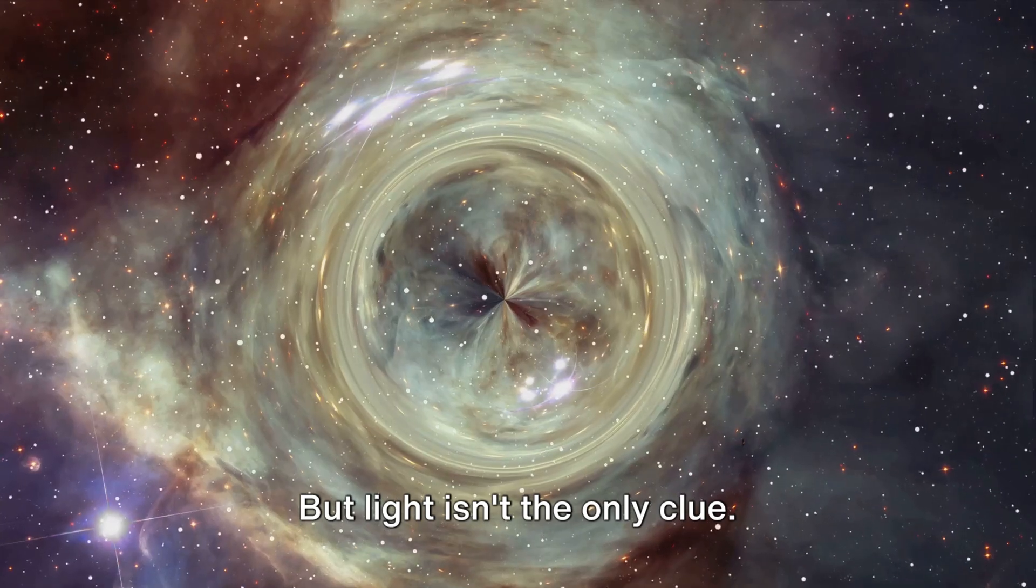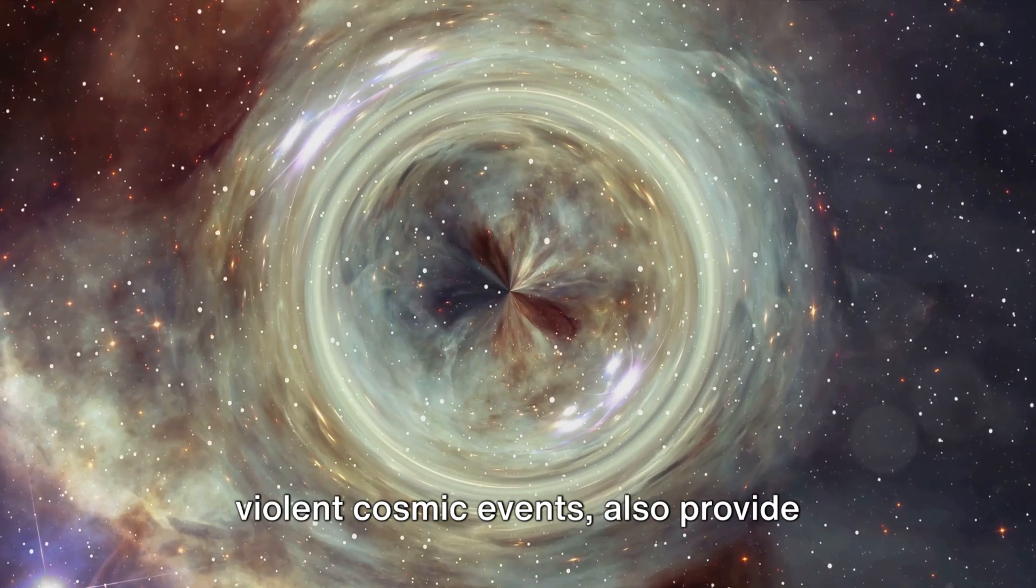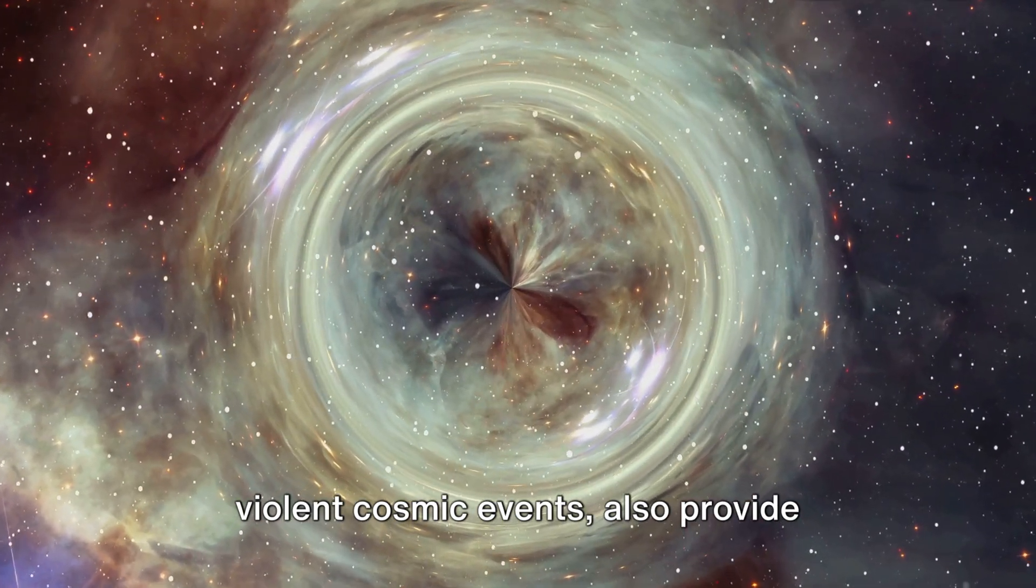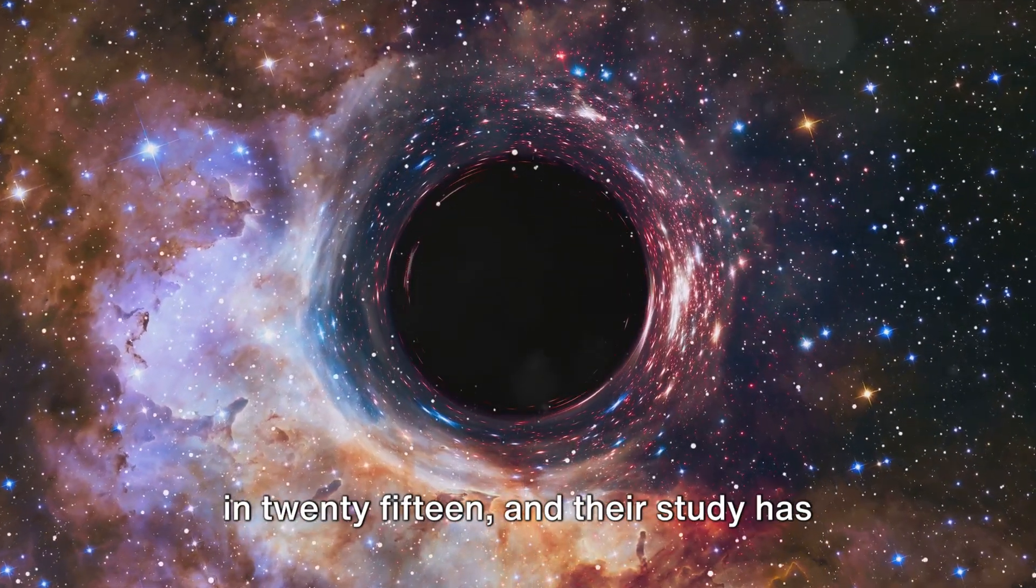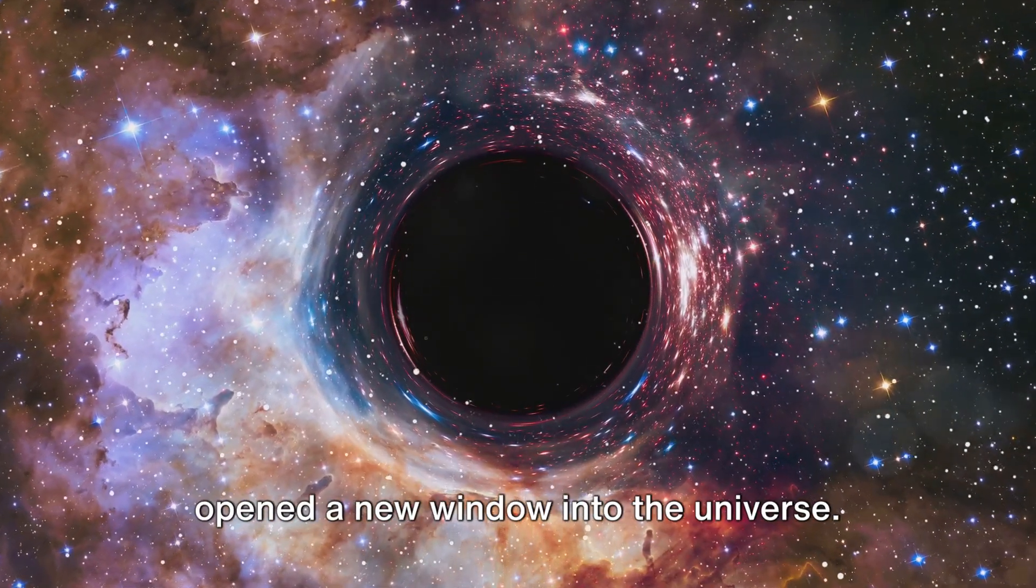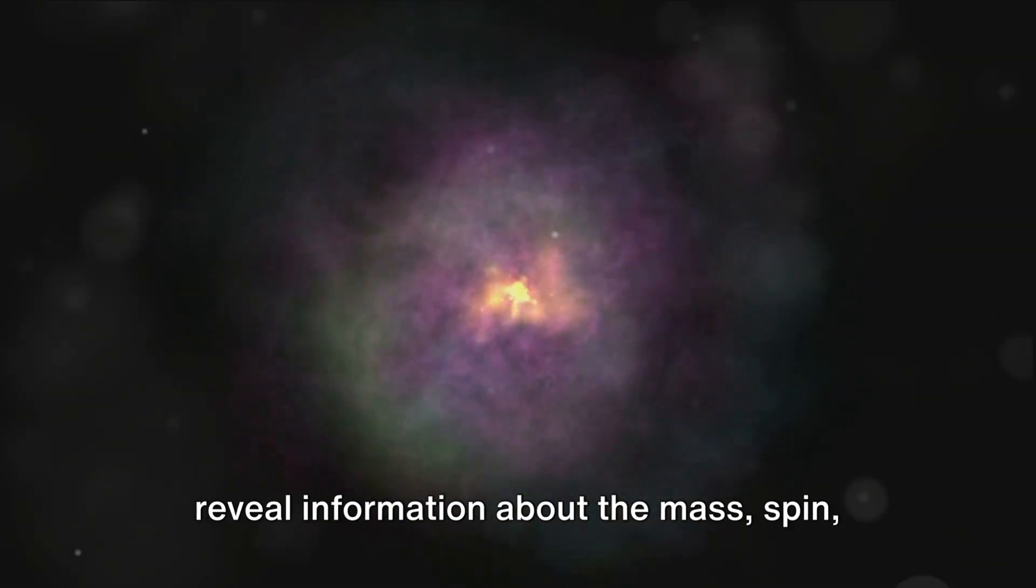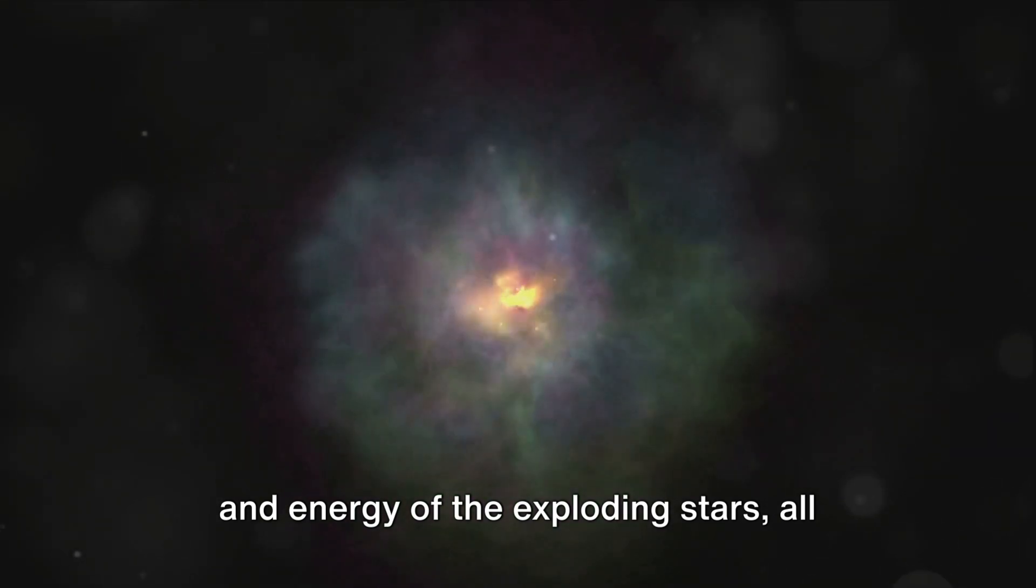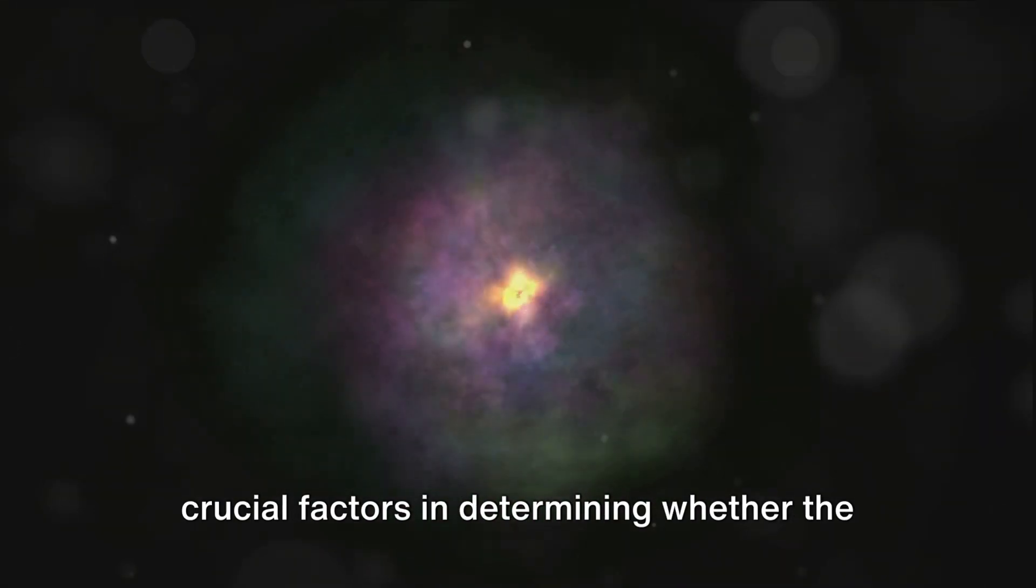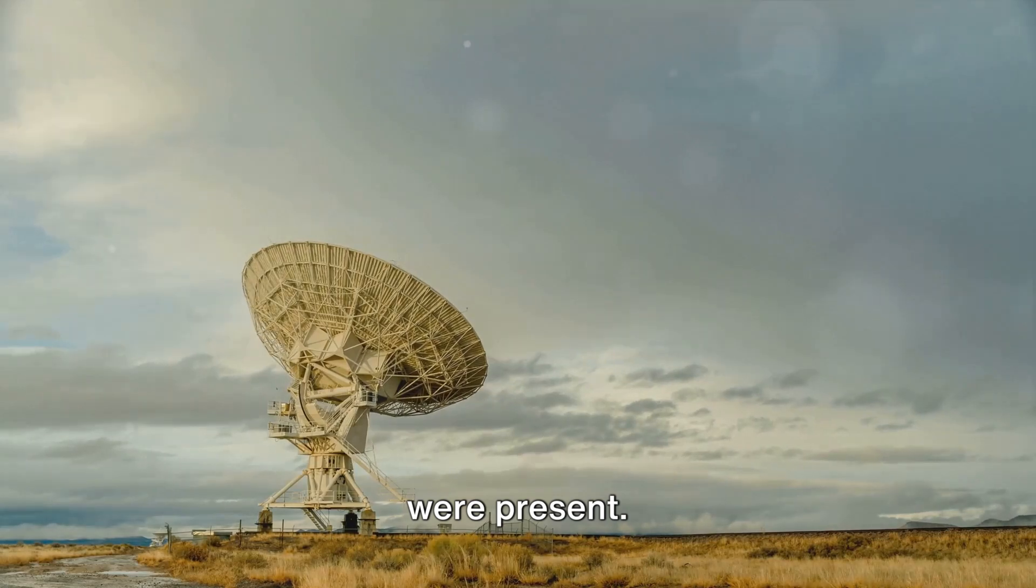But light isn't the only clue. Gravitational waves, ripples in the fabric of space-time caused by the most violent cosmic events, also provide valuable insights. These waves were first directly detected in 2015, and their study has opened a new window into the universe. In the case of supernovae, the waves can reveal information about the mass, spin and energy of the exploding stars, all crucial factors in determining whether the conditions for R-process element creation were present.